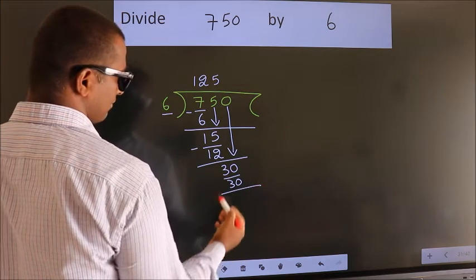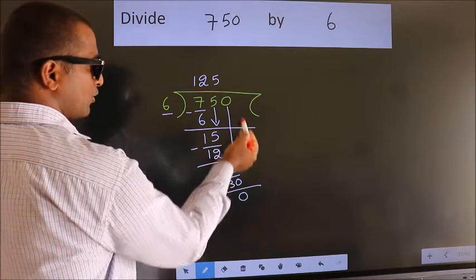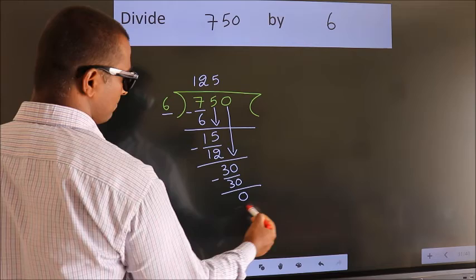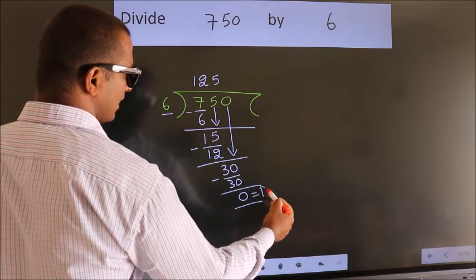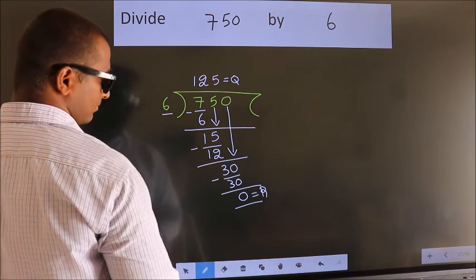Now we subtract. We get 0. No more numbers to bring down, so we stop here. This is our remainder. This is our quotient.